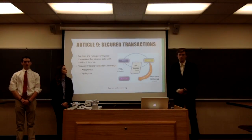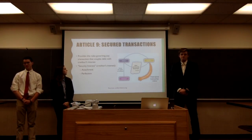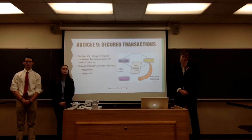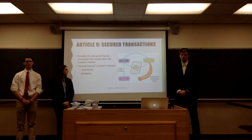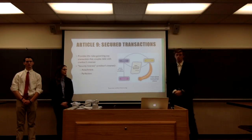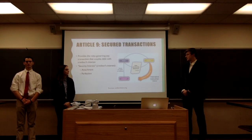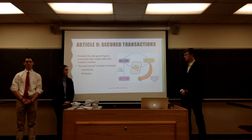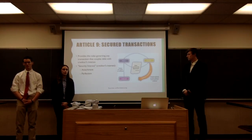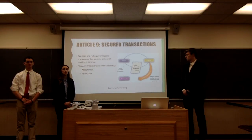Article 9 deals with secured transactions. It provides rules governing any transaction that couples debt with a creditor's interest, known as a security interest. Two things must be present: attachment and perfection. There must be an agreement between the debtor and creditor, and the debtor's personal property — the collateral — must be identified. If the debtor defaults, the creditor is able to repossess that collateral and sell it; that is the attachment.